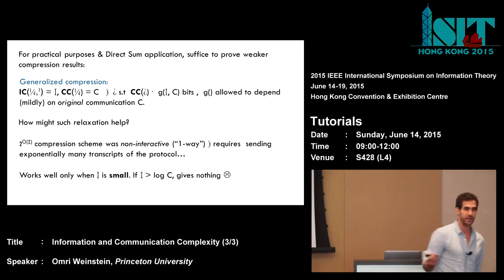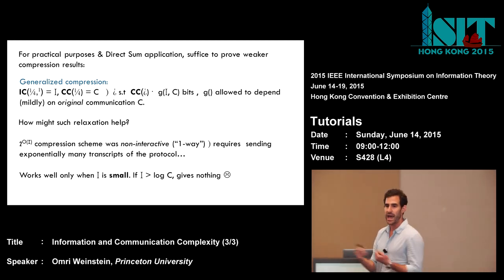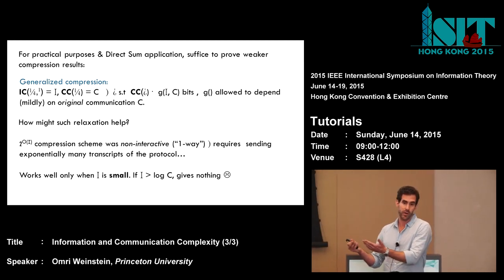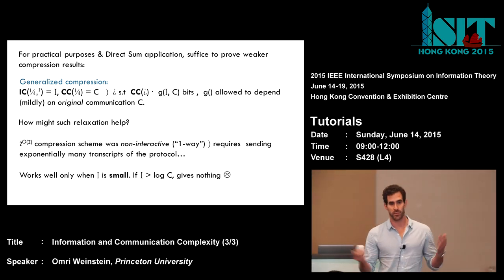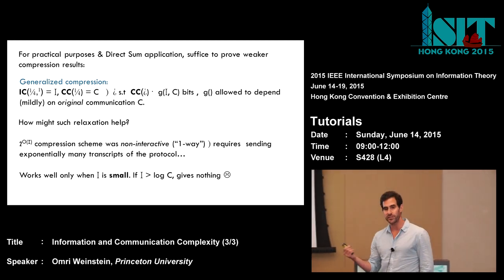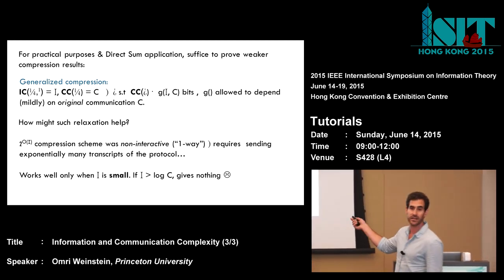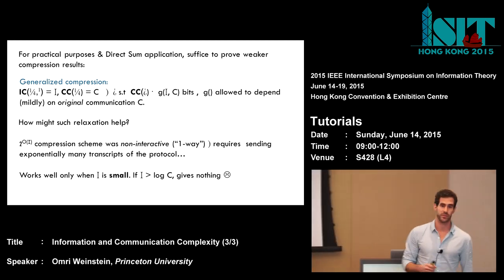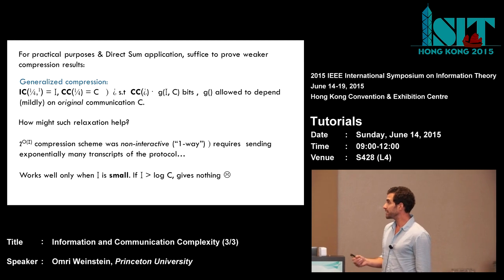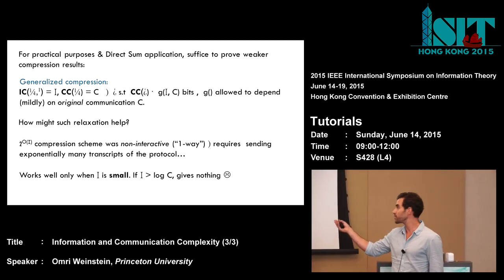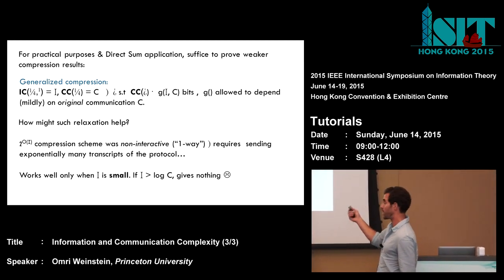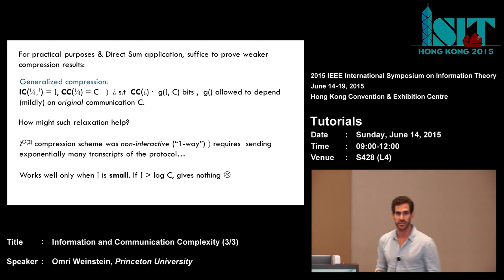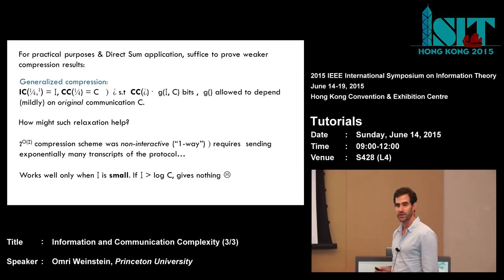Let's revisit the compression protocol we just saw, which uses 2^i bits. One conspicuous feature of this protocol is that despite the fact that the original protocol had potentially multiple rounds, the 2^i compression is not an interactive scheme — it was essentially a one-way protocol. Alice just computed the set of all potential candidate transcripts, transmitted them to Bob, and hoped for the best. Then Bob either rejected or accepted. The price to pay for this non-interactivity is exactly what causes the exponential blow-up in the number of transcripts.